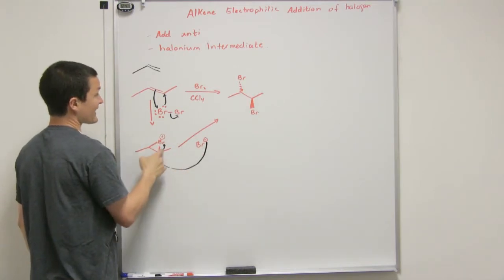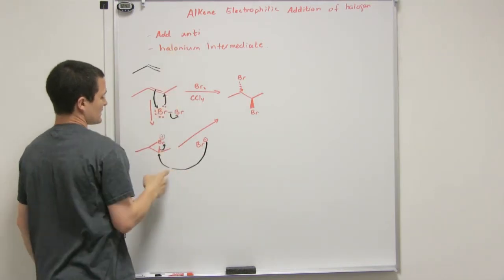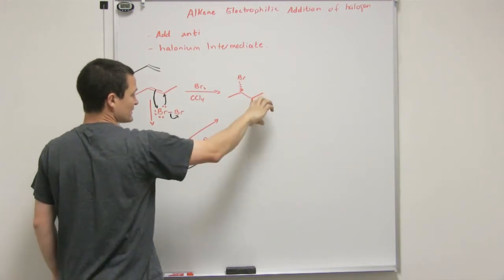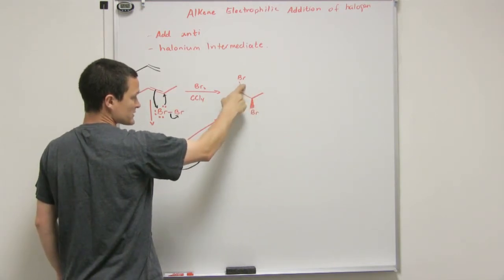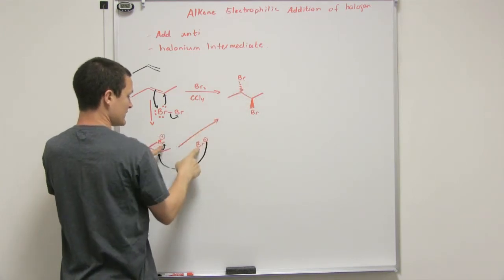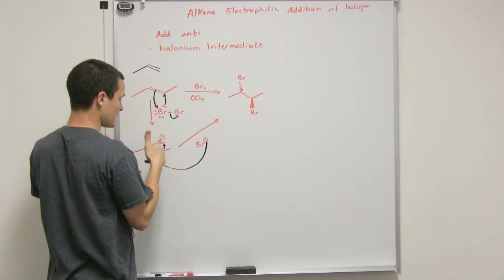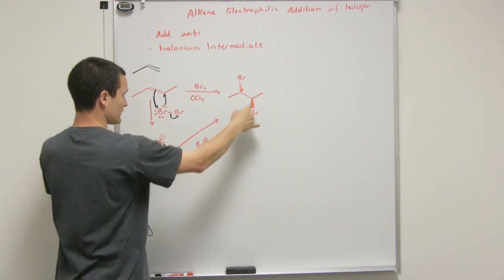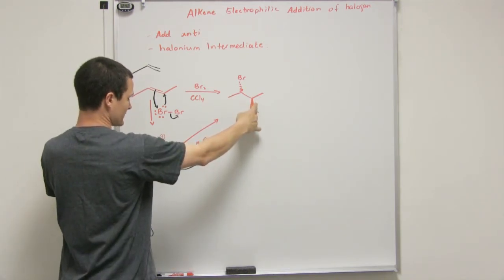Then the bromine, when it comes in, it has to add anti. What that means is it's going to add to the opposite side of the molecule. So if this bromine is back, that will mean this bromine is going to add coming into the board this way on top of the molecule, which would make it stick out like this.